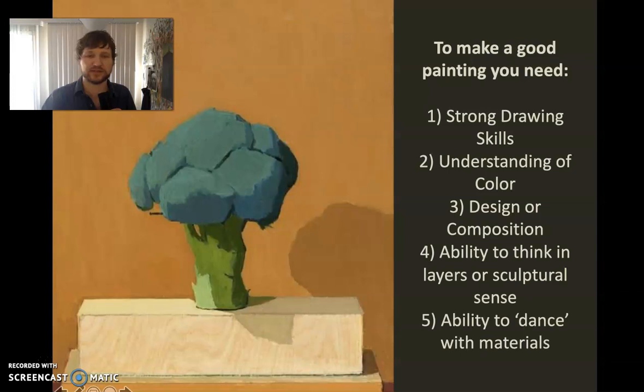Fourth is the ability to think in layers, or to build a painting like a sculpture. And fifth is the ability to dance with materials — the capacity to have a back and forth with the drips, the shapes, the marks, the different surfaces, and all that kind of thing.